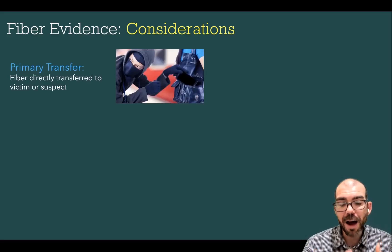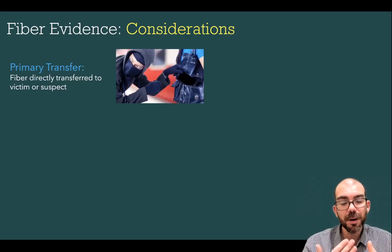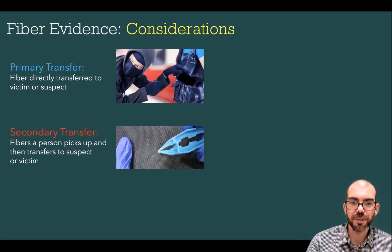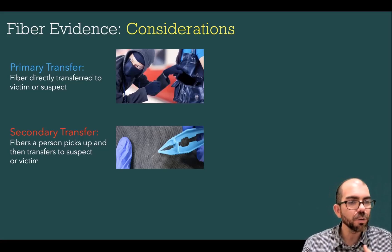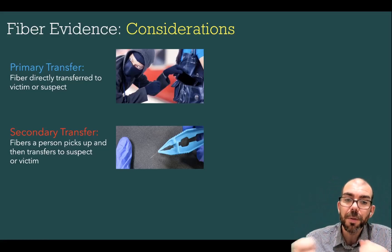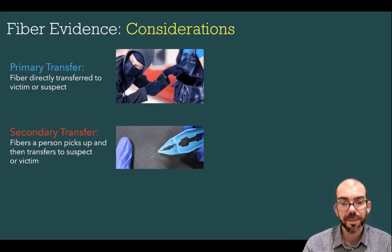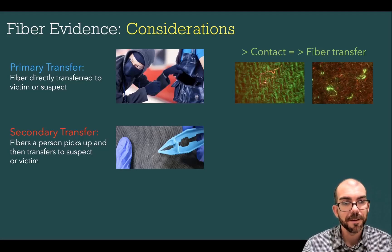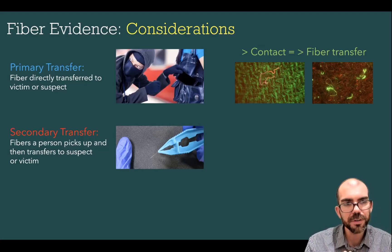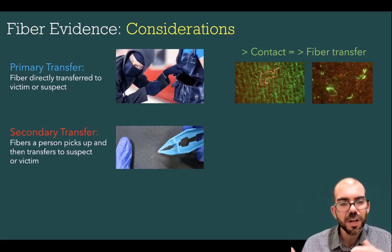Some considerations when thinking about how fibers could have shown up at a crime scene: if a fiber is directly transferred to a victim or subject from the environment or between themselves, we refer to that as a primary transfer. Fibers can also be picked up from one location and then transferred to another person — this is a secondary transfer. For example, a suspect could pick up carpet fibers from their home, come in contact with the victim, and transfer those carpet fibers onto them. The greater the contact between an individual and a surface with fibers, the greater the amount of fiber that transfers — Locard's exchange principle.